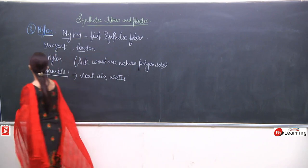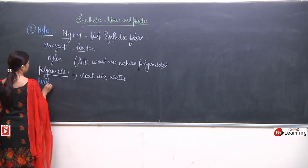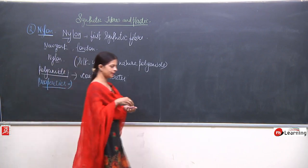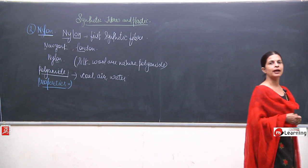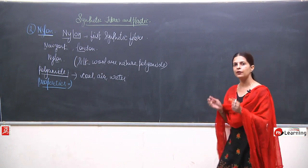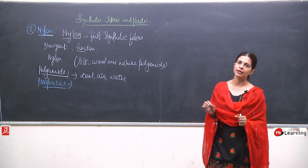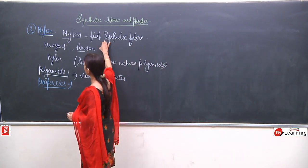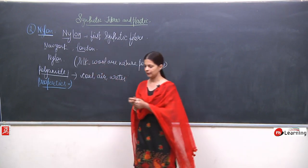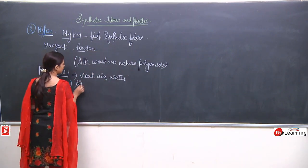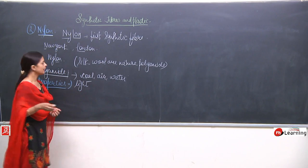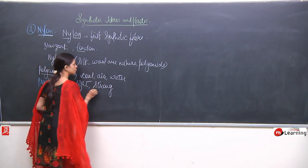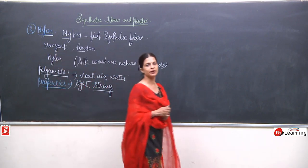Now we will talk about certain properties of nylon. Nylon is basically a very light material - light in the sense it is not too heavy, but it is also very strong. When I use the word strong, it has the highest tensile strength. Now, what is the meaning of this and how can we prove it?